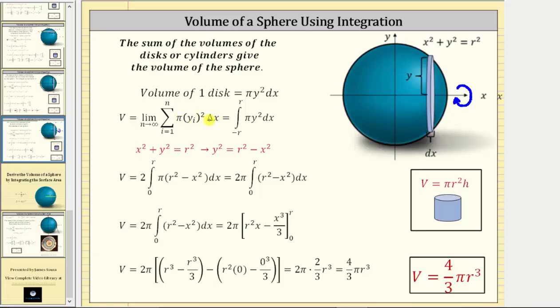Well, pi y sub i squared delta x represents the volume of one disk, a right circular cylinder, and therefore this sum represents the sum of n disks.